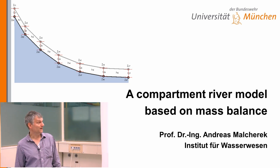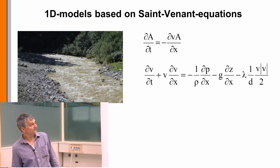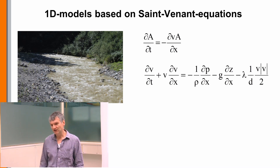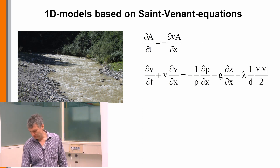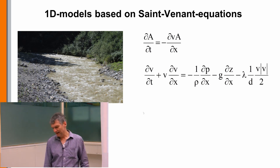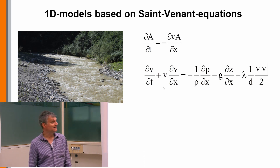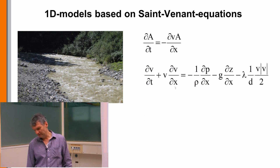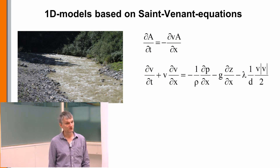Why do we need such models? Usually in our lectures we simulate rivers using the one-dimensional Saint-Venant equations. These equations are based on a continuous mass balance over x — the coordinate following the river stretch — and a momentum balance equation. This momentum equation is very difficult to solve because it is non-linear, containing velocity and its derivative.